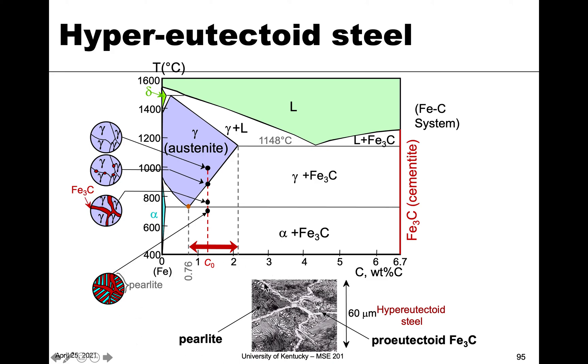So a real microstructure of hyper eutectoid steel is shown here. And again, you can see the perlite, these perlite kind of colonies, with these layered structure, but you can see along the grains between the perlite, you can see that pro eutectoid cementite.